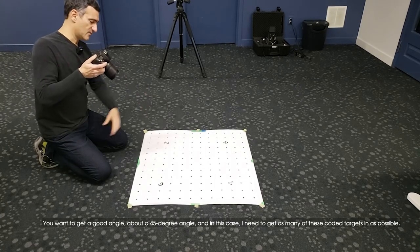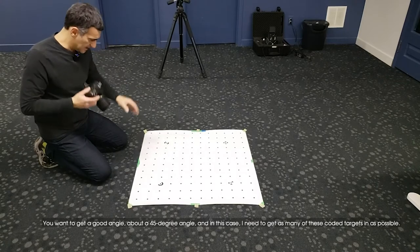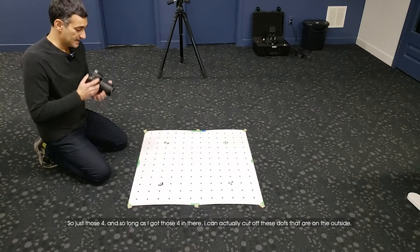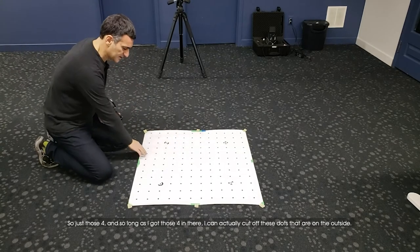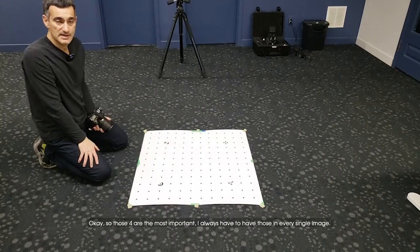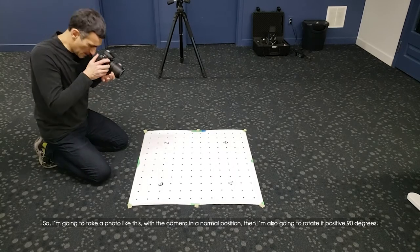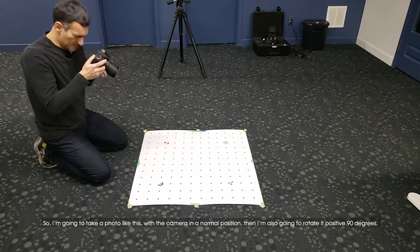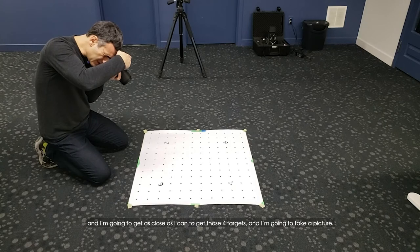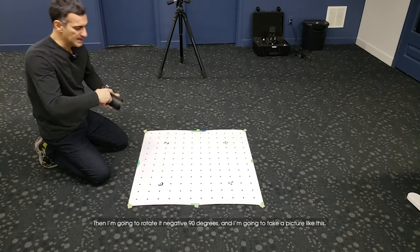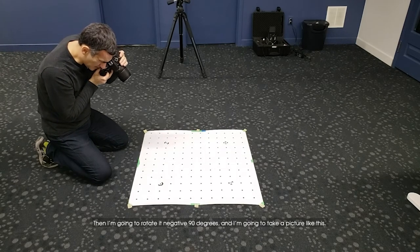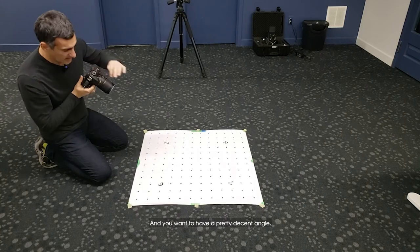You want to get a good angle, about a 45 degree angle. In this case I need to get as many of these coded targets in as possible, so just those four. So long as I got those four I can actually cut off these dots on the outside. Those four are the most important. I always have to have those in every single image. I'm going to take a photo like this with the camera in a normal position, then rotate it positive 90 degrees to get those four targets, take a picture, and rotate it negative 90 degrees and take a picture.